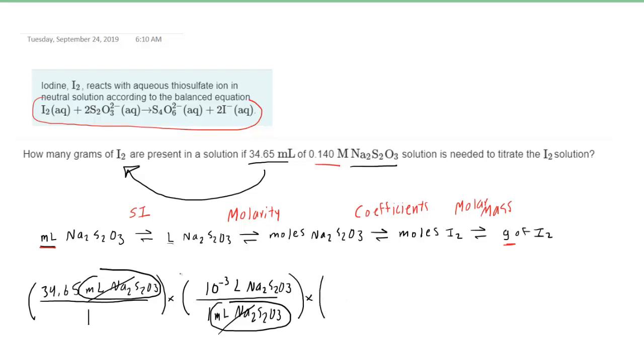We can now move on to convert from liters into moles using the molarity. Remember that this capital M is the same thing as moles per liter. So one way we can think of that 0.140 capital M would be 0.140 moles per 1 liter. So in our conversion factor, we're going to make sure that we put liters in the denominator.